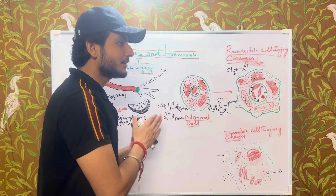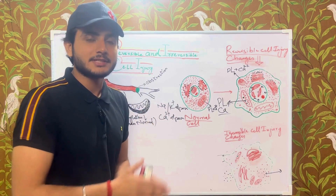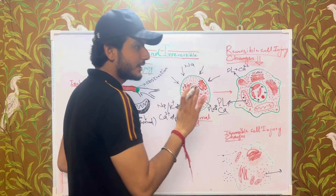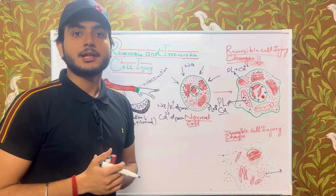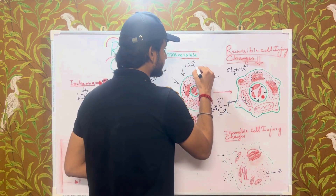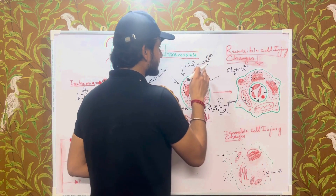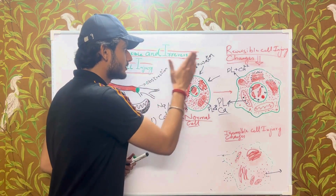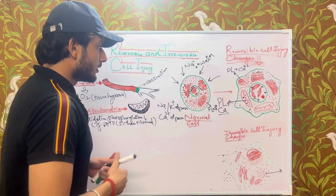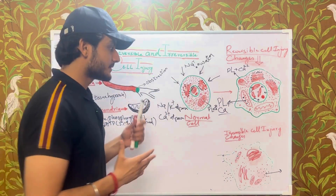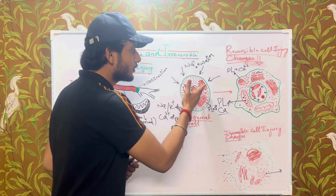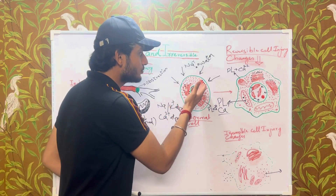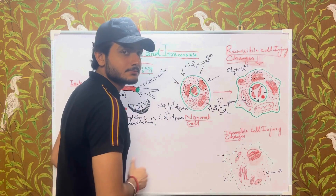Due to these two factors — impairment of sodium-potassium ATPase function and increased cell membrane permeability — sodium starts coming into the cell. Wherever sodium goes, it takes water alongside. So this sodium influx together with water causes cell swelling. This water also enters the endoplasmic reticulum, causing the endoplasmic reticulum to start swelling.